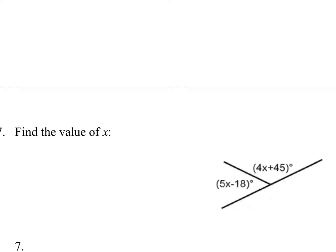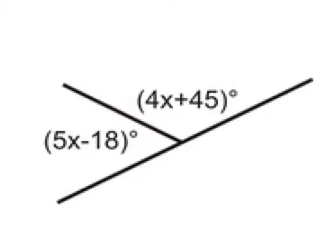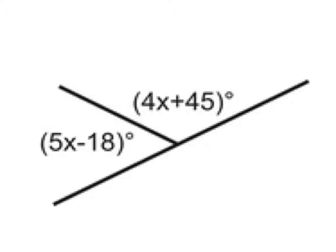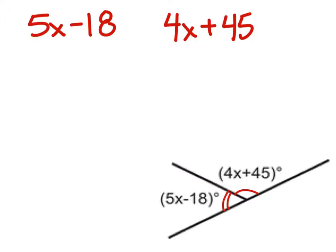All right, thank goodness on this one it did not ask us to find the measures of the angles — all we really want to do is solve for X. We can see on this diagram that the two angles are supplementary, because if we combine those two angles they make up 180 degrees. So let us combine them and make 180 degrees — there are the two angles, we will add them together and they should equal 180 degrees.